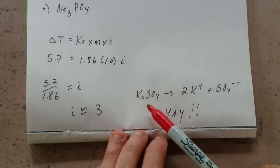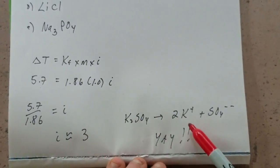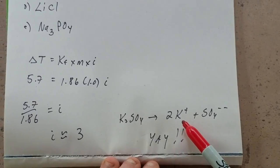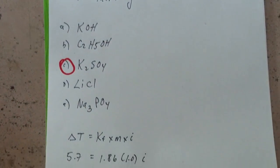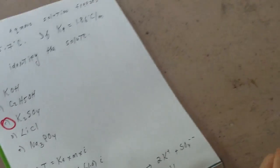So clearly you see potassium sulfate dissociates into two potassium ions and a sulfate for i equals 3. And therefore, the correct answer would be choice C, potassium sulfate.